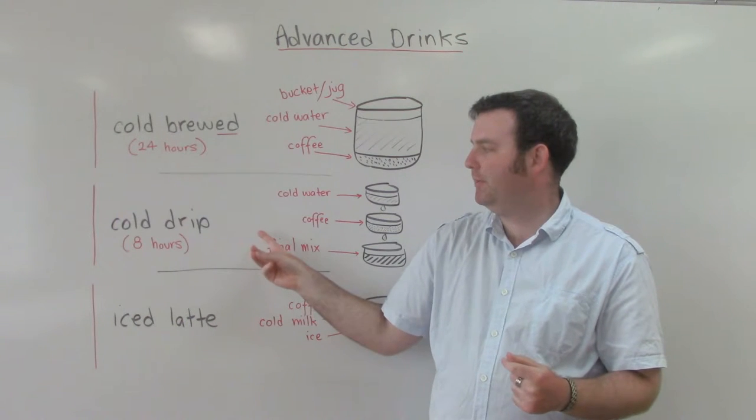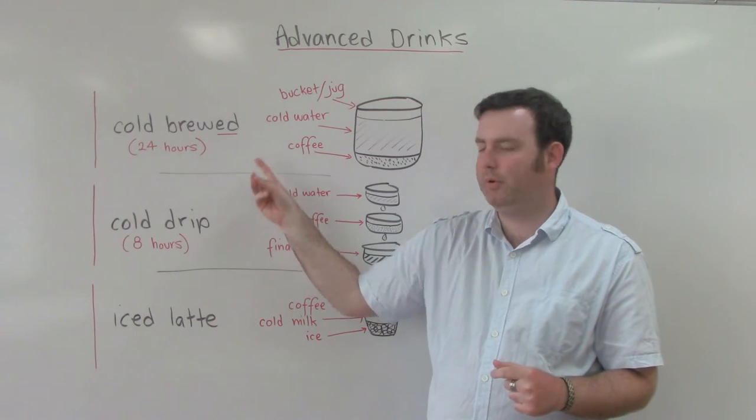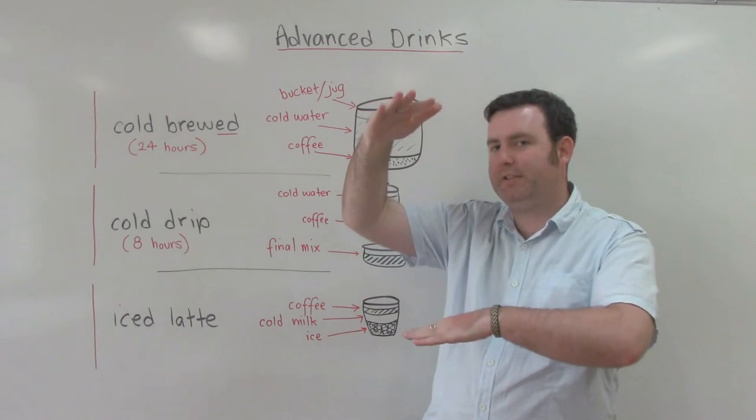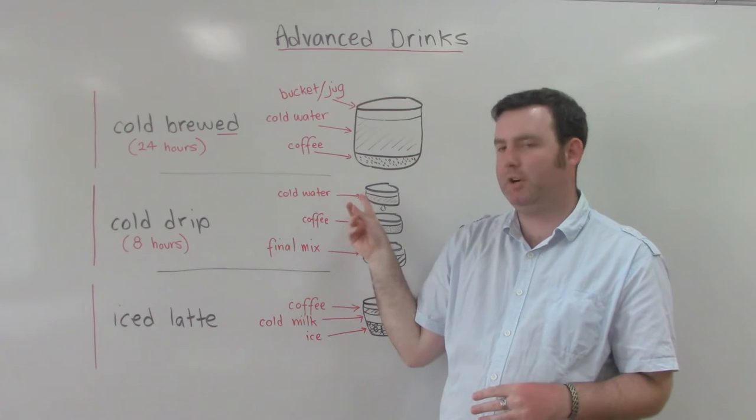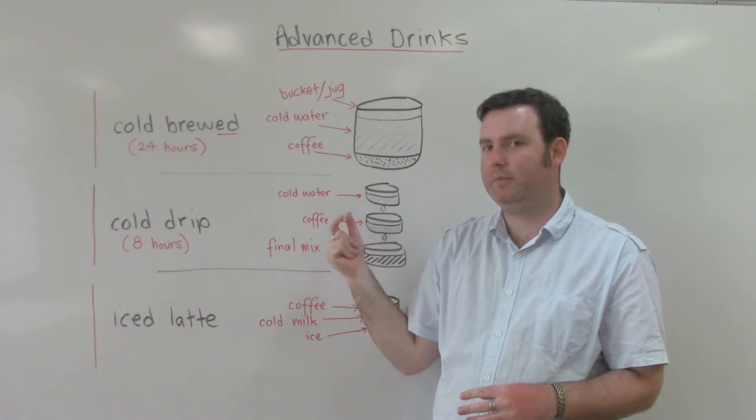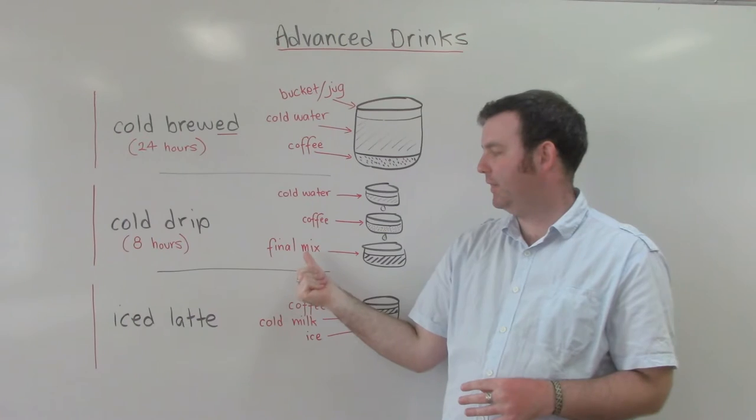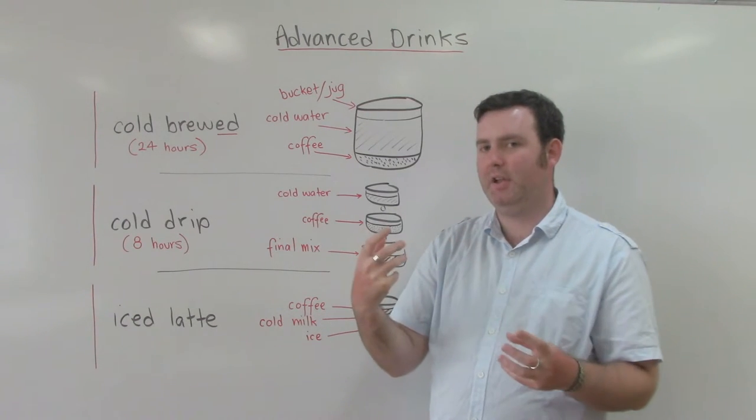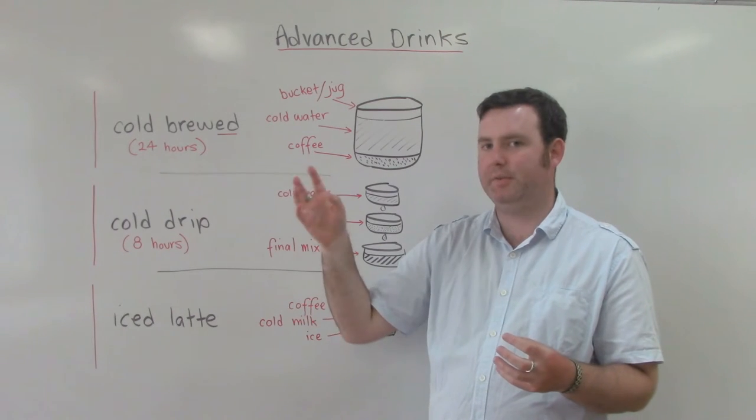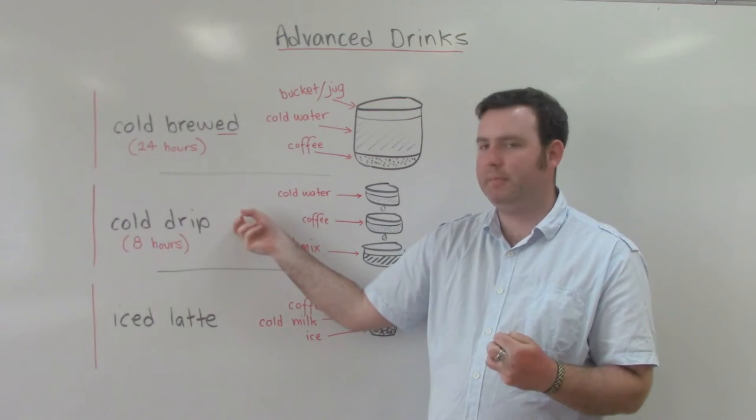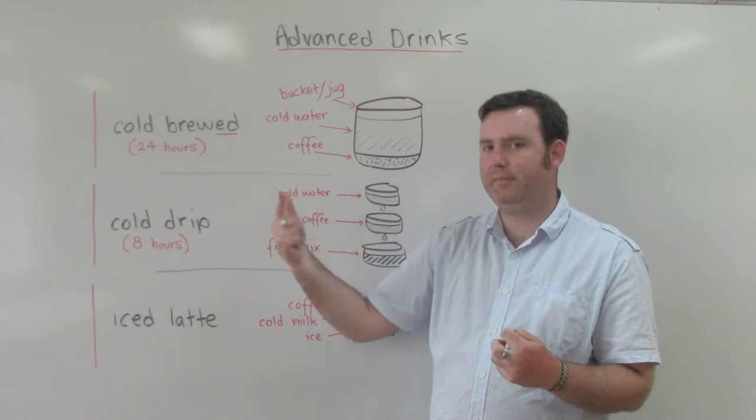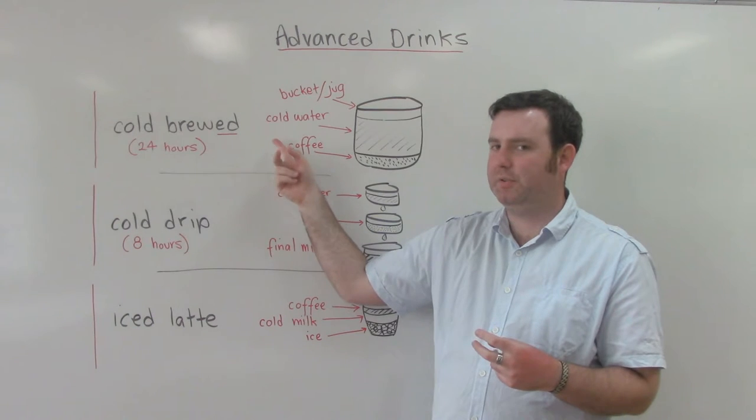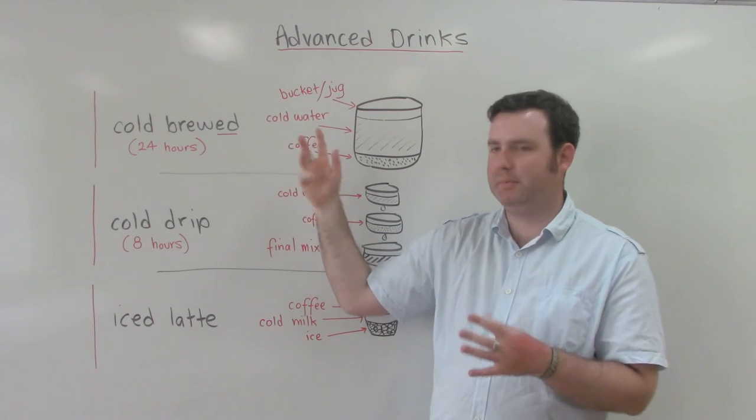The next one, cold drip, a bit quicker than cold brewed. Still eight hours, but quicker than this one. This one we have three different containers. The first one is cold water, which drips through into the coffee, which has a filter, and then into the last container, which is a final mix. And then we're ready to drink that after eight hours. A cold drip is a cleaner and richer flavor than the cold brewed. This one is more similar to regular coffee, except it's cold.